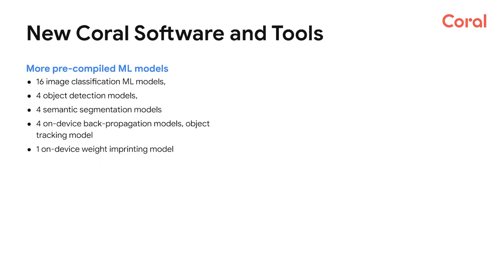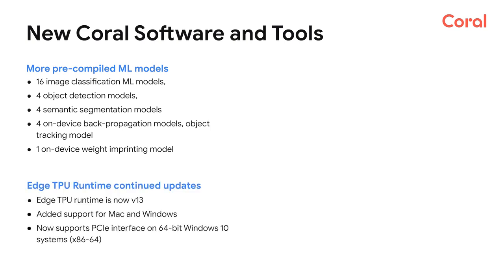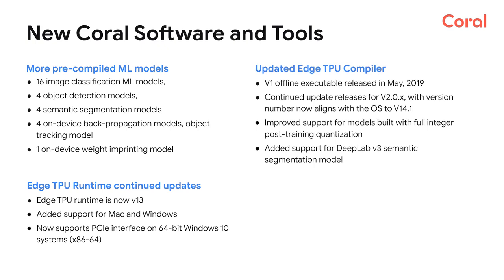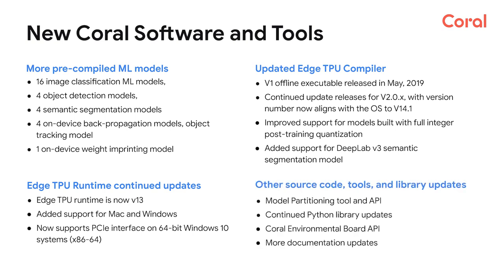On the software side of the Coral platform, there have also been many updates since last I/O. We expanded our pre-compiled machine learning models from the initial two models to a current list of 25 pre-compiled, ready-to-use models. The Edge TPU runtime has been updated and is now at version 13, supporting Mendel Linux, Mac OS, and Windows. On the tool side, we have continued updates including compiler improvements and more model support. We have also released several other libraries, including the Environmental Board API and a model partitioning tool for breaking large models into smaller ones. Documentation has been updated continuously, with many datasheets and schematics published on our website.